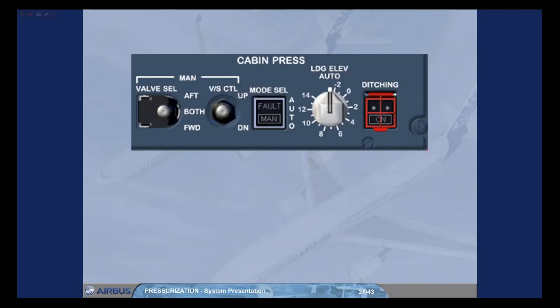The landing elevation selector normally remains in the auto position. Landing elevation, which is required by the pressurization system, is then provided by the FMGS based upon the elevation of the destination airport. If the landing elevation is not available from the FMGS, then it can be set manually using this selector.